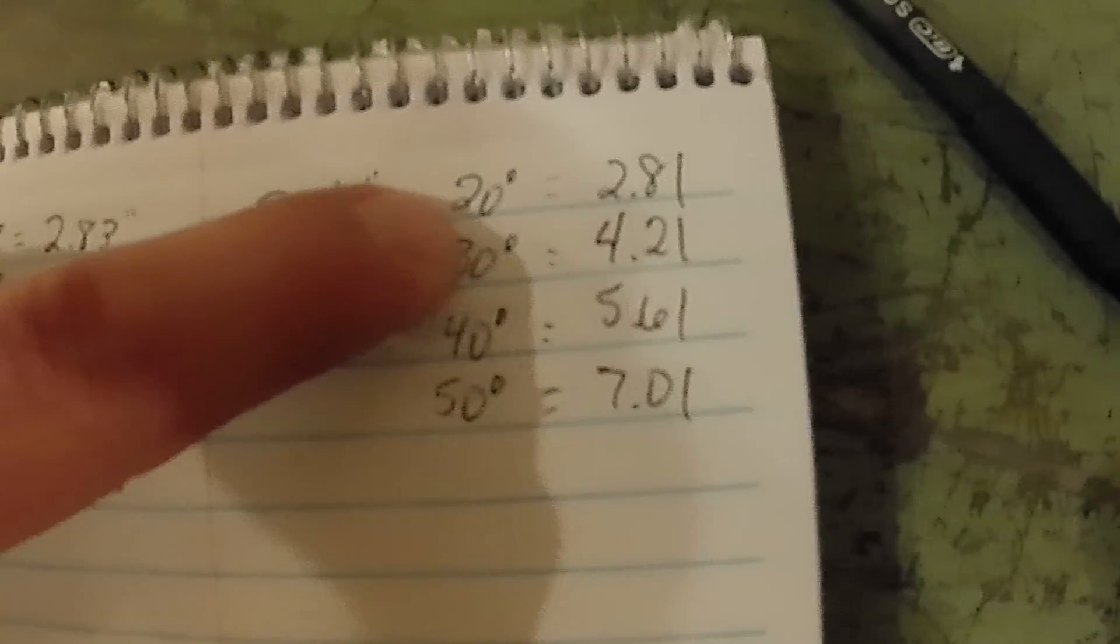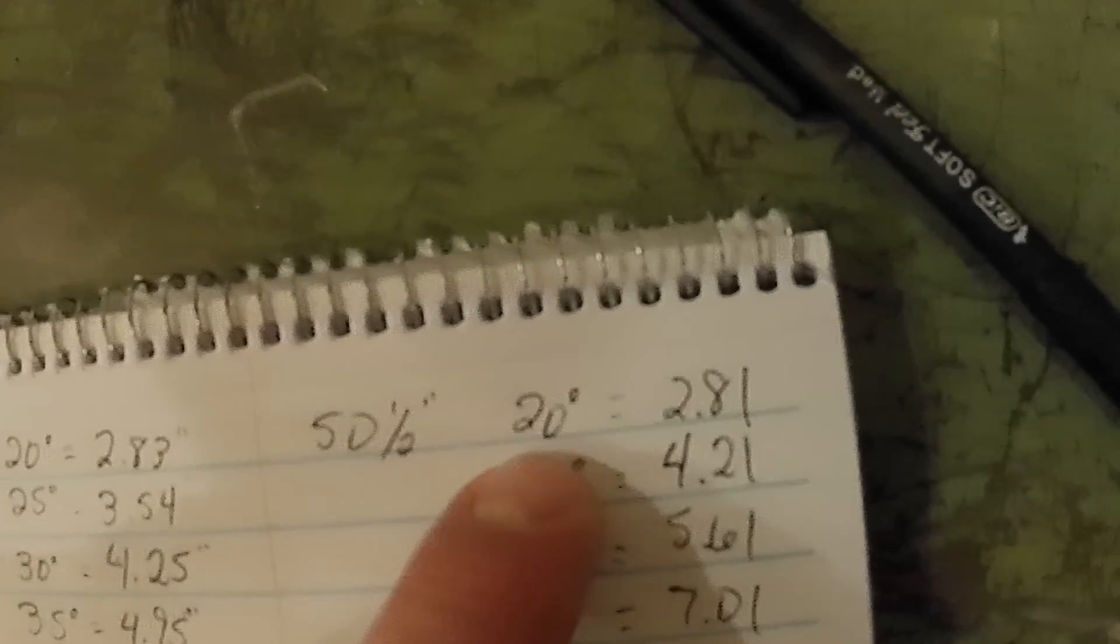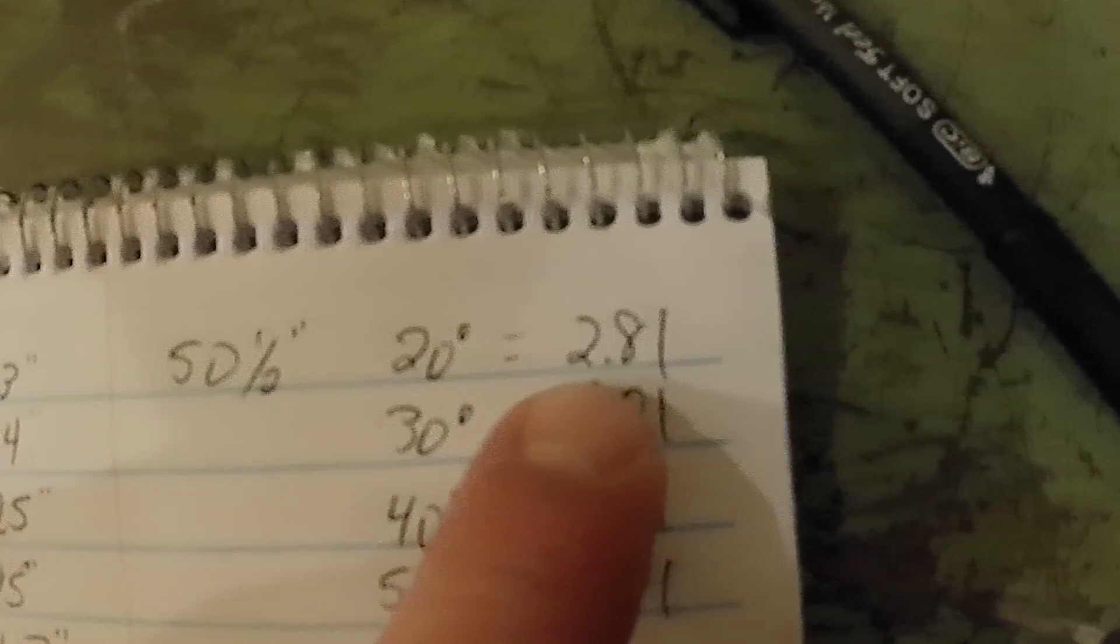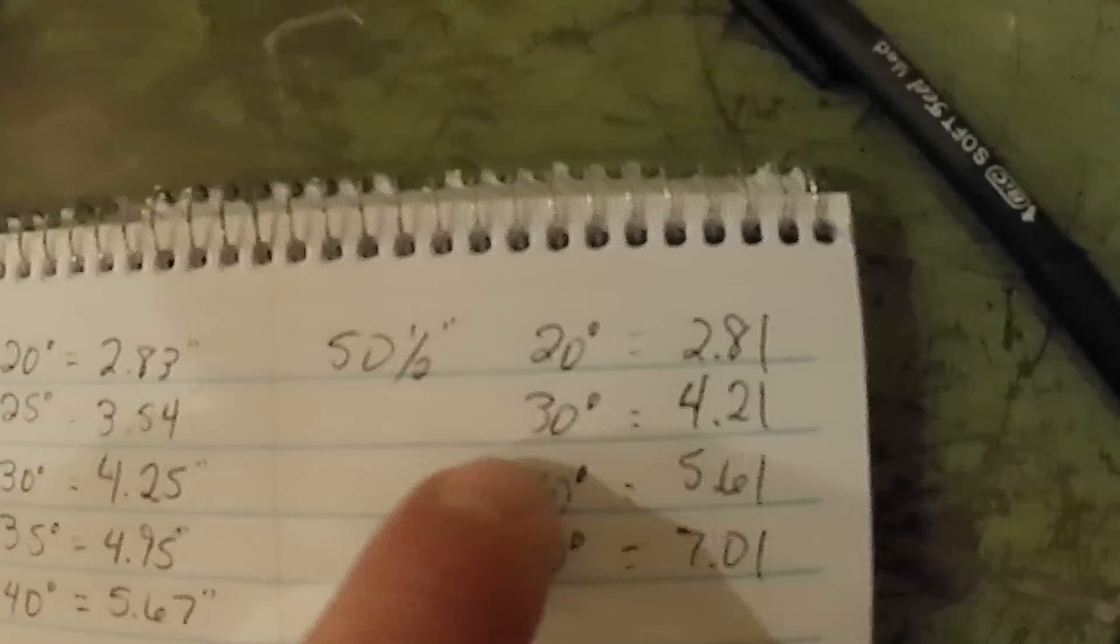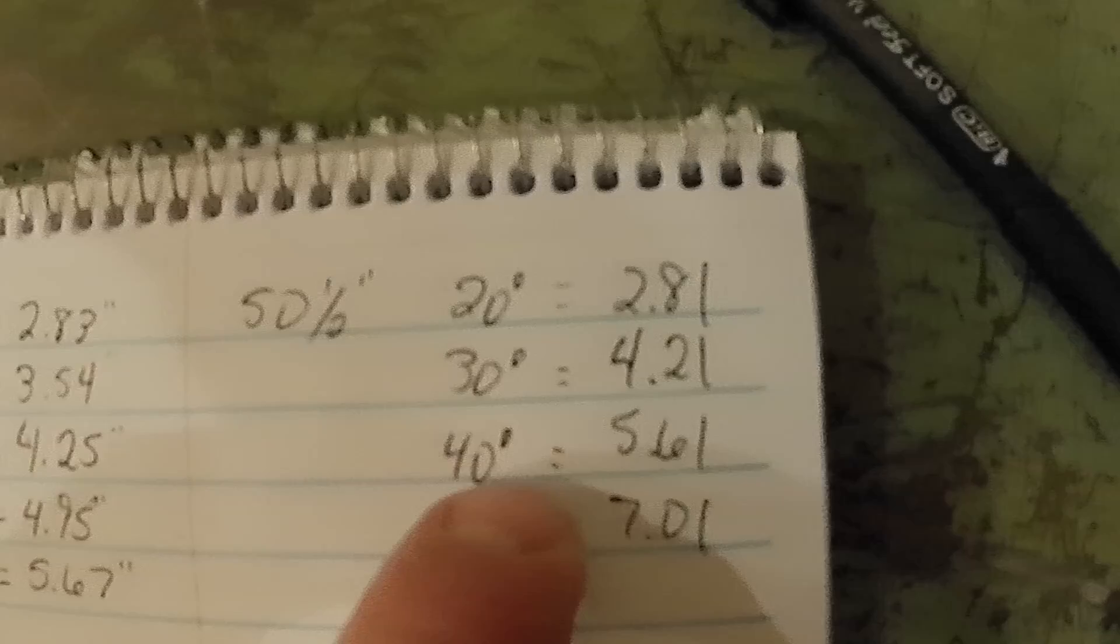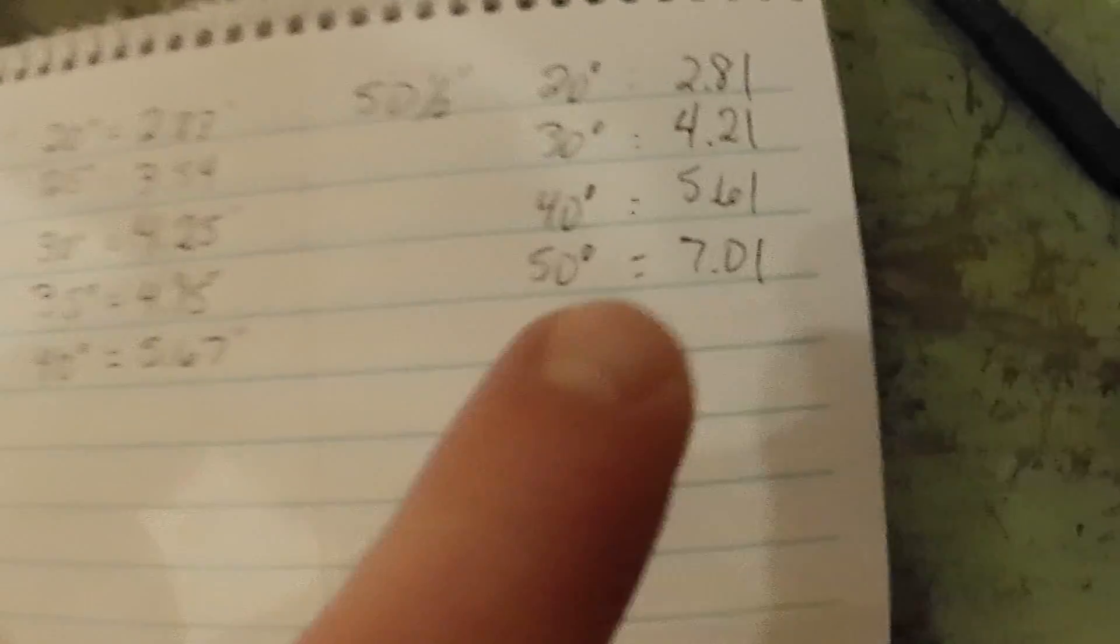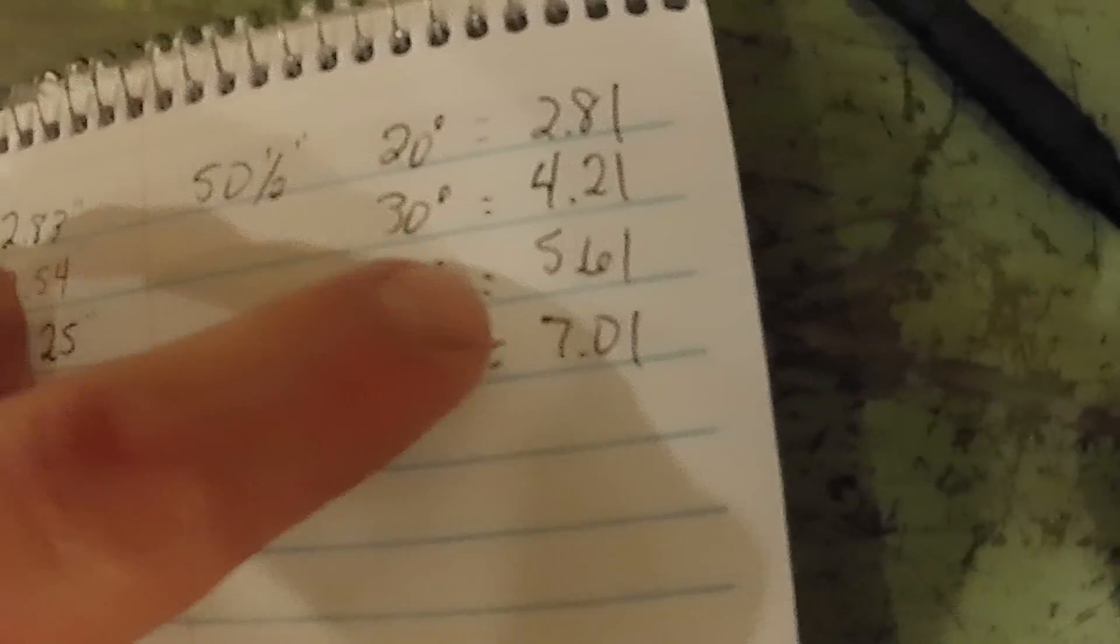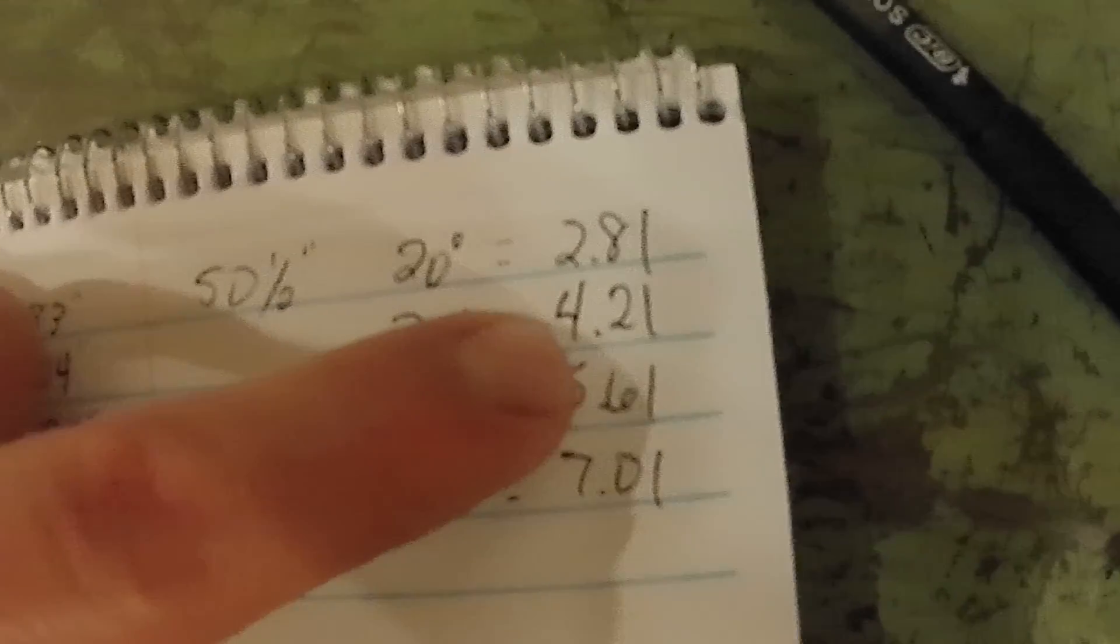For my 20 degree mark, it's 20 times 50.5 divided by 360, which equals 2.81 inches. For my 30 degree mark, it's 30 times 50.5 divided by 360, which is 4.21 inches. 40 times 50.5 divided by 360 is 5.61. 50 times 50.5 divided by 360 is 7.01. So this 20 degree mark will be 2.81 inches up my string, 30 degree mark will be 4.21 inches up my string.